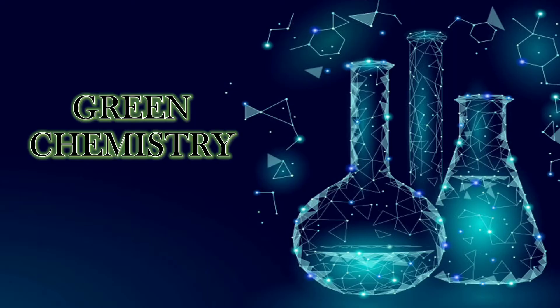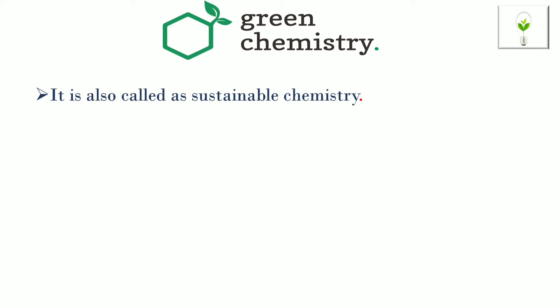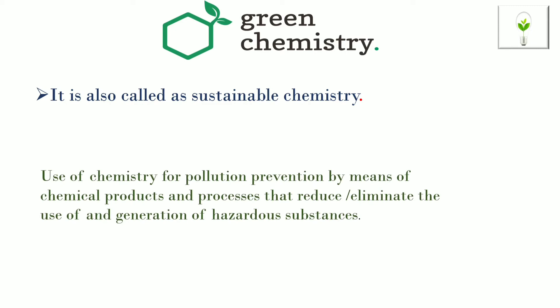Welcome back to the channel Technical Knowledge with Engineers. Today we are going to learn about green chemistry. Green chemistry, by its name, is related to the environment — we have to carry out reactions which will not harm nature but be beneficial to it. It is also called sustainable chemistry, defined as the use of chemistry for pollution prevention by means of chemical products and processes that reduce or eliminate the use and generation of hazardous substances.